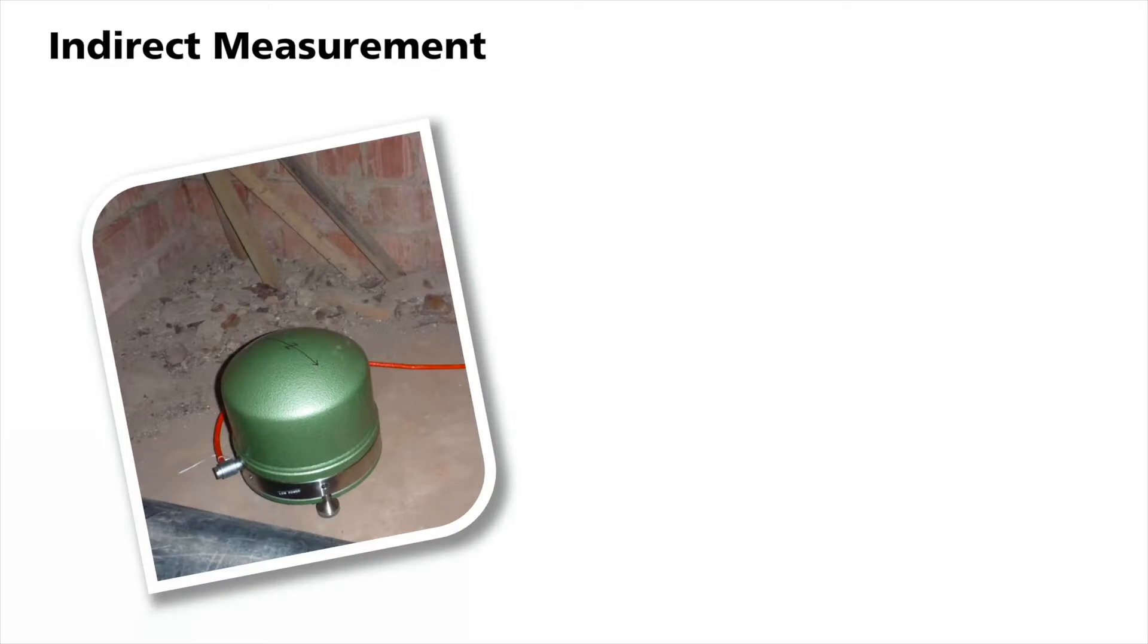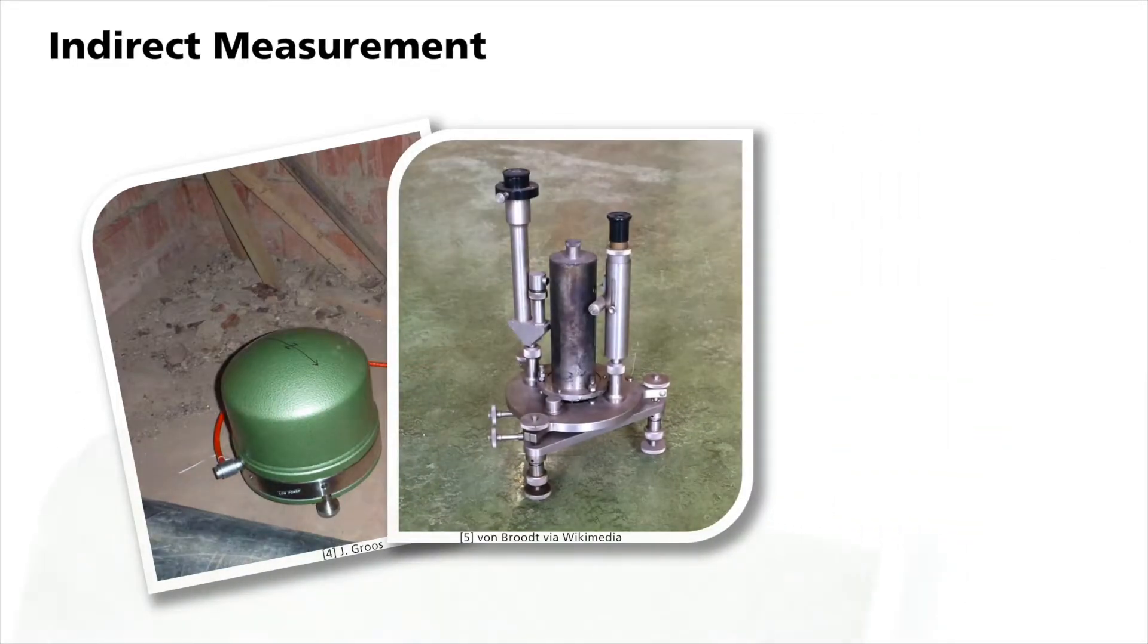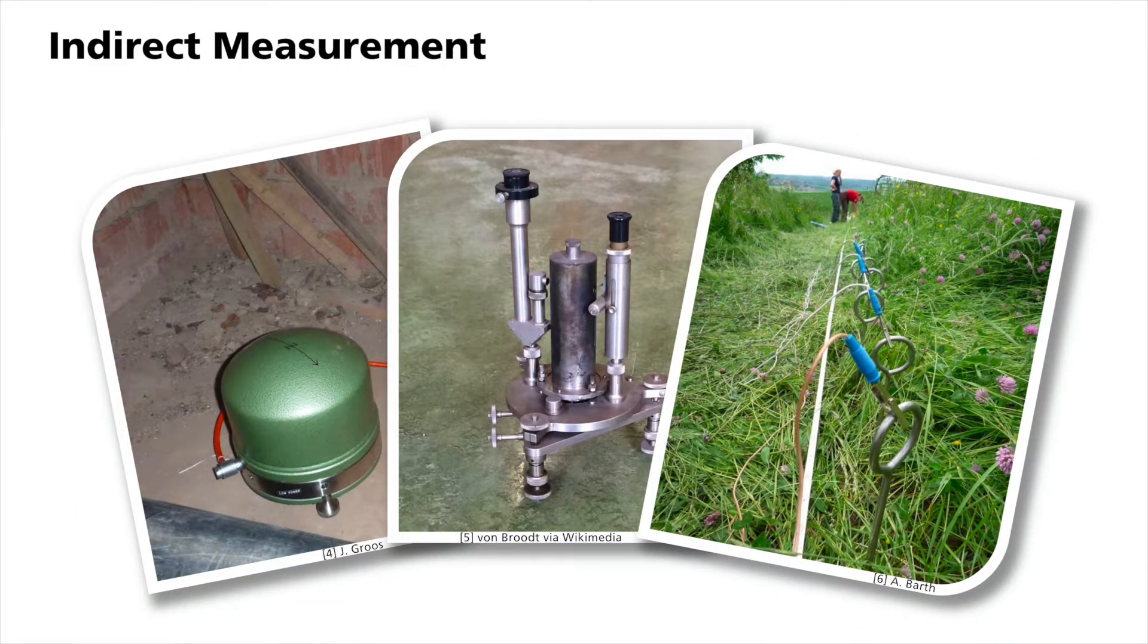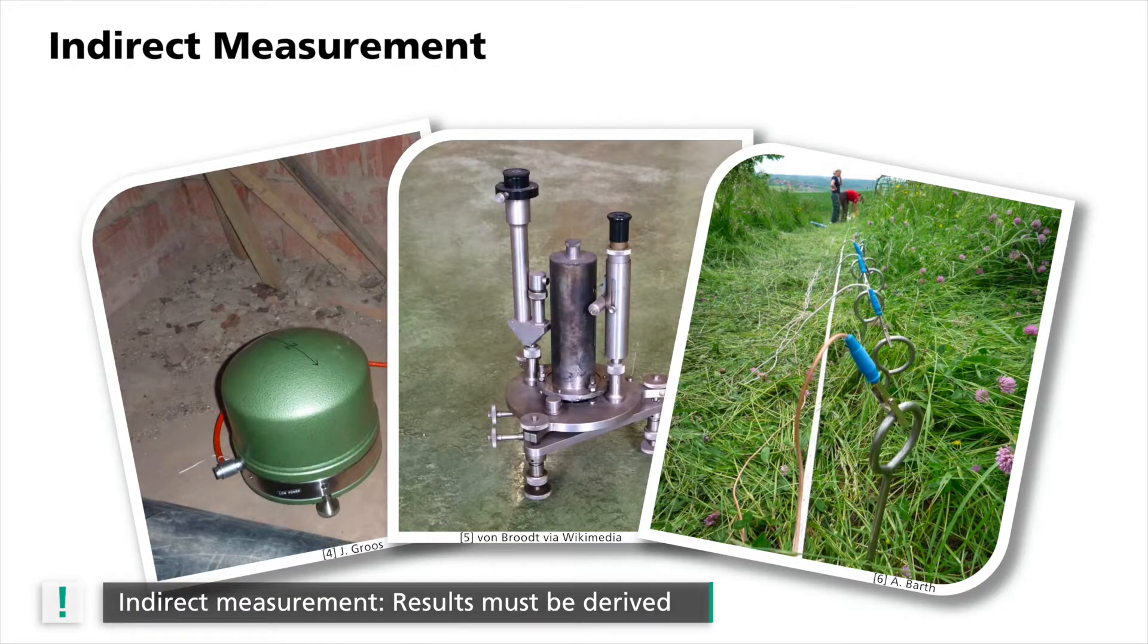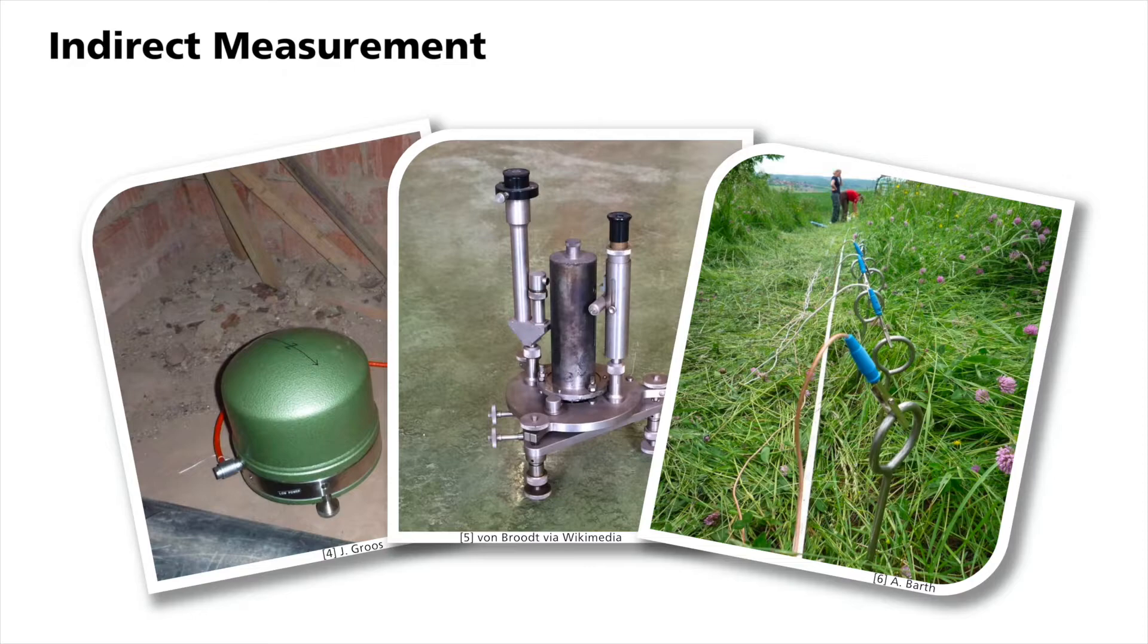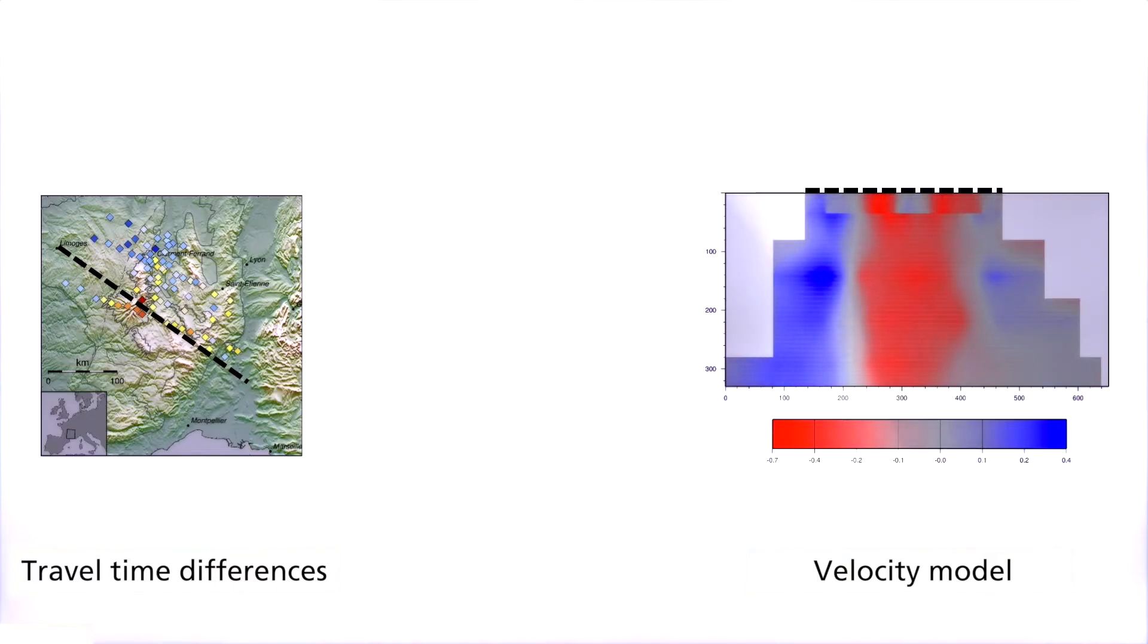These field measurements taken with seismometers, gravimeters, geoelectrical equipment, and other devices are all indirect measurement procedures. This means that the measured values only provide us with indirect information about what is under the Earth's surface. The subsurface property we are looking for will then need to be inferred from these indirect measurements. One such indirect measurement is the travel time difference in our example from the Massif Central.